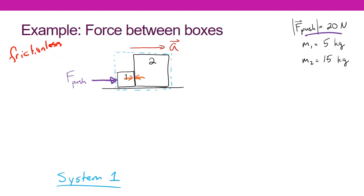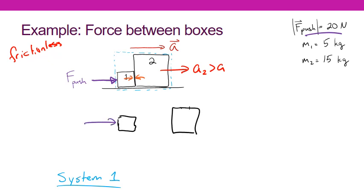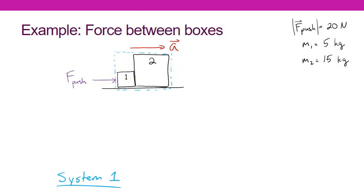Because if I push this box, I would expect both boxes to accelerate smoothly. I wouldn't expect box 2 to get away. So if box 2 had an acceleration greater than the acceleration I find for the two-box system, I would expect box 2 to eventually start to pull away from box 1. Similarly, if box 1 had an acceleration larger than the two-box acceleration, I'd get box 1 smooshing into box 2.